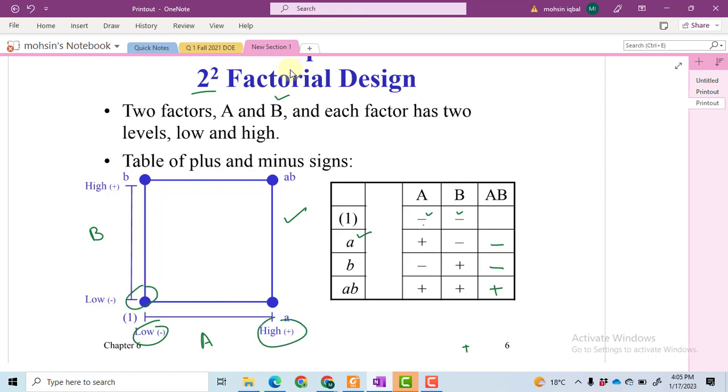This is B at low level, B at high level, and here A and B are both at high level. In order to calculate the effect of A, we subtract the high level values—these two values minus these two values. This is how we can calculate A.